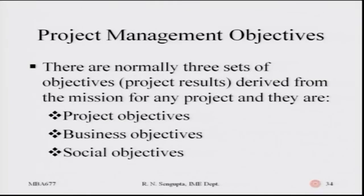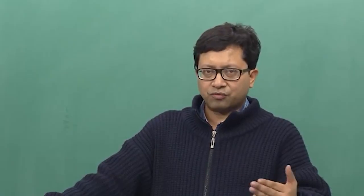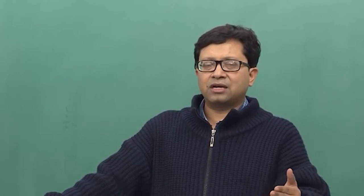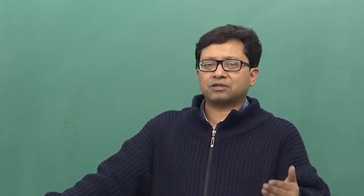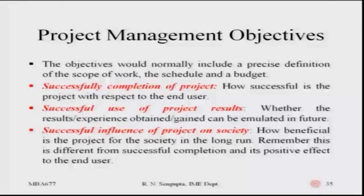There are normally three sets of objectives: project objectives, business objectives, and social objectives. They may differ but should not be at loggerheads such that the overall basis of the project management work defeats the purpose of the business objectives or social objectives. The objectives would normally include a precise definition of the scope of work from the project objective point, the business objective point, and the social objective point.